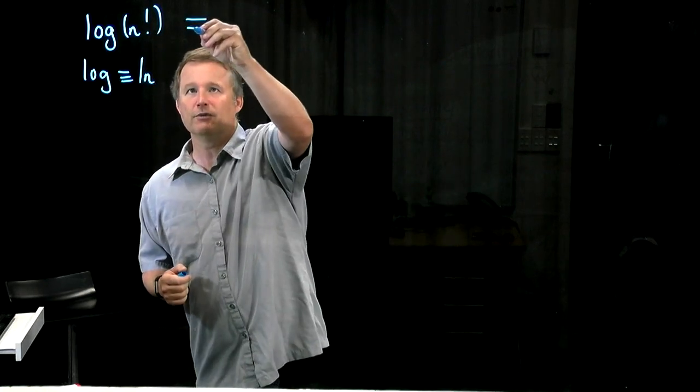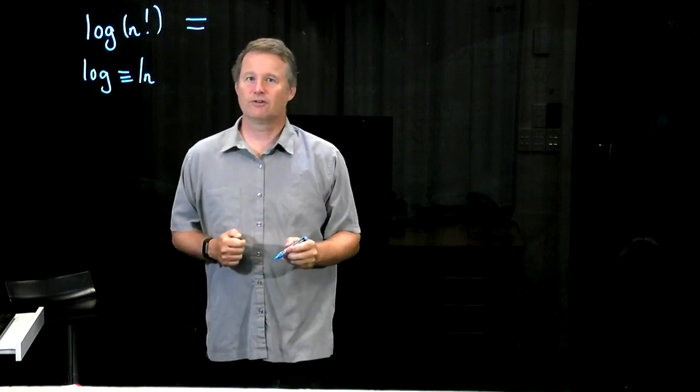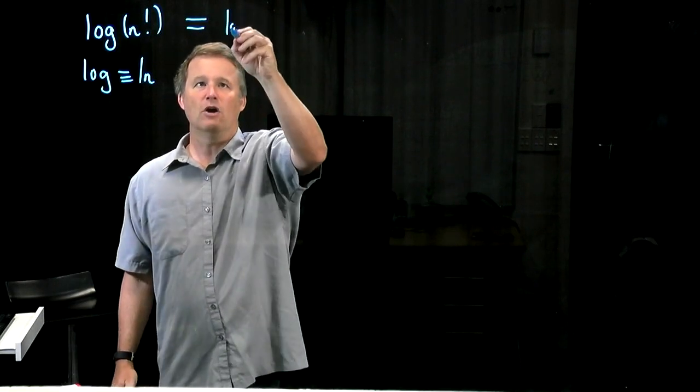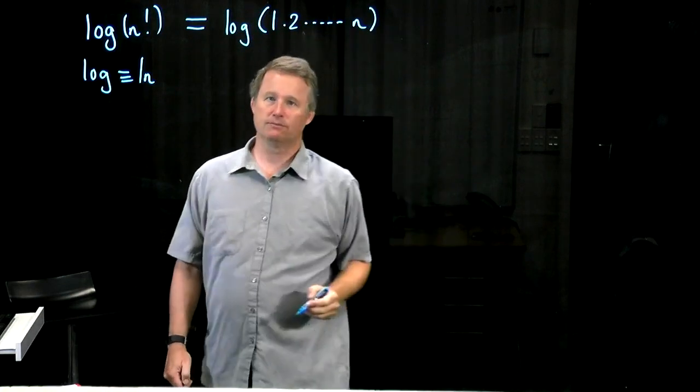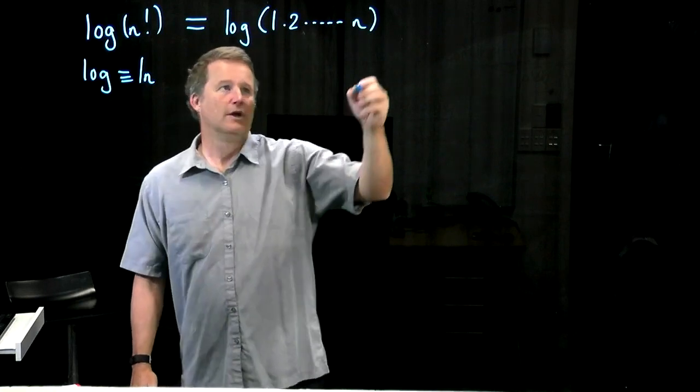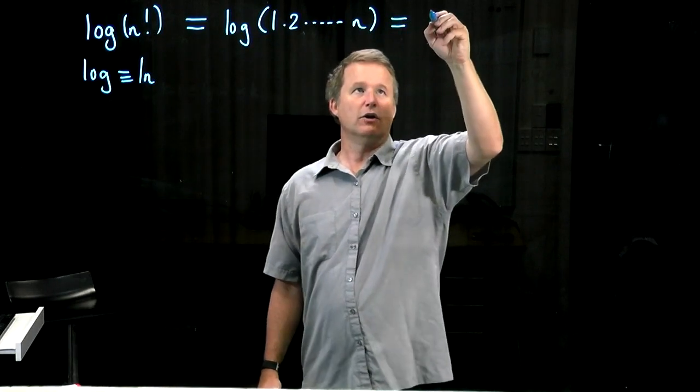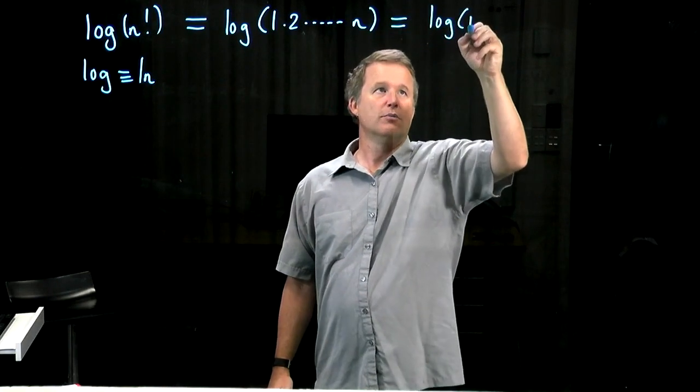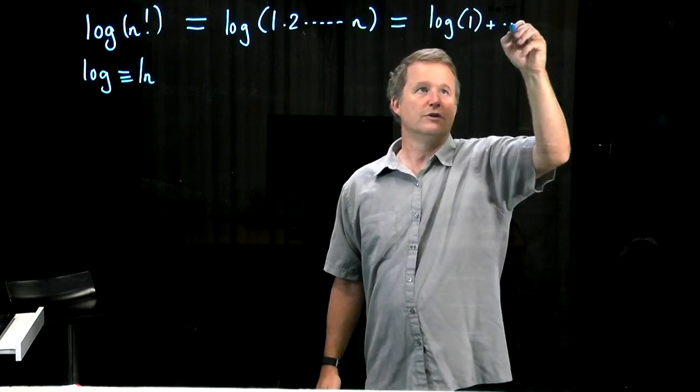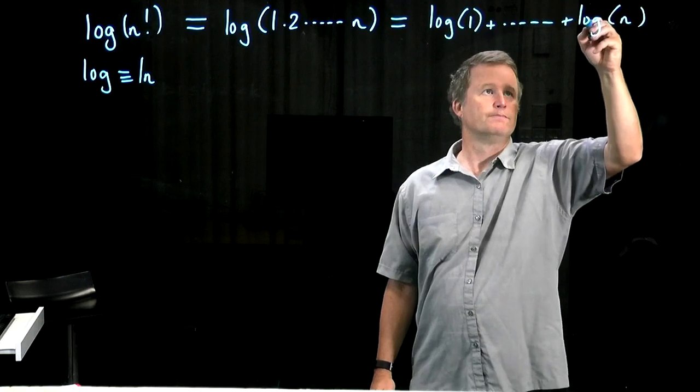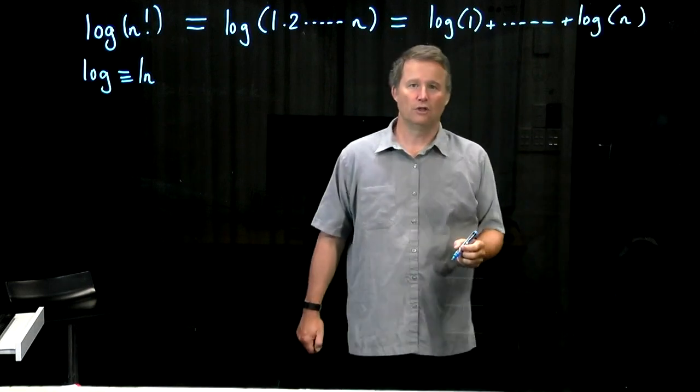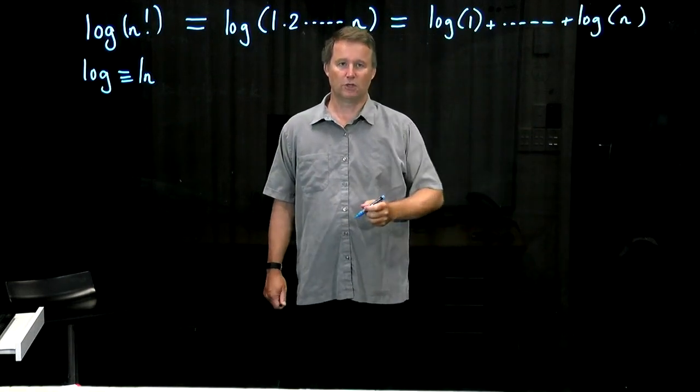So the key thing we need to notice here is that the log of n factorial is the log of the product of n numbers. On the other hand, log works by converting multiplication to addition, so we just have the sum of the log of the first n positive integers.